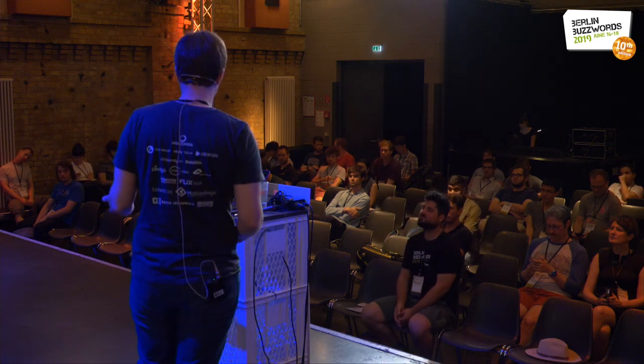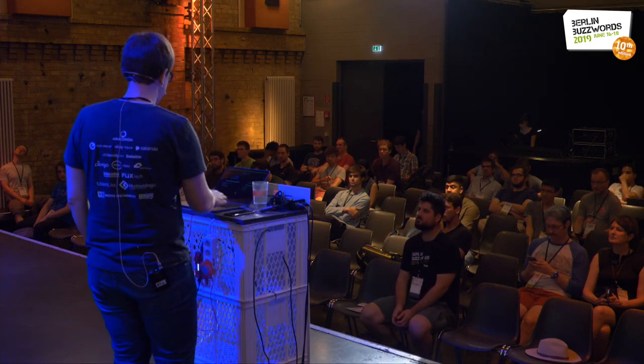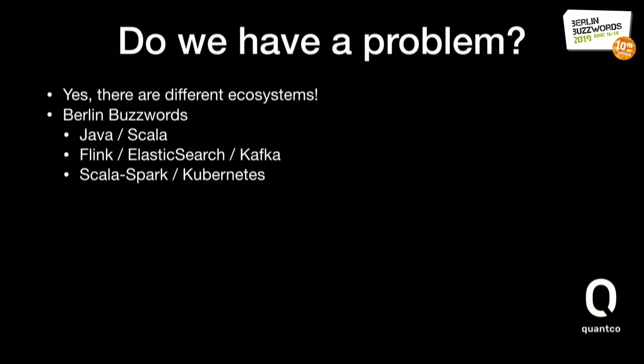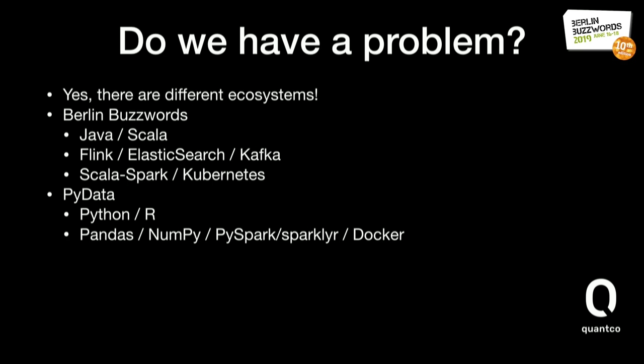Here at the Berlin Buzzwords conference, if you skim the schedule, you see buzzwords like Java, Scala, Flink, Elasticsearch, or the Scala side of Spark. At PyData conferences, people also talk about data, but they're more focused on writing code in Python and R, using tools like Pandas, or the Python or R side of Spark — but not the Scala side.